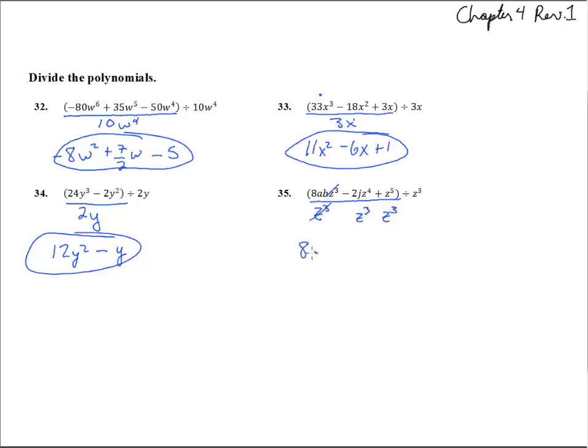There it just cancels out, 8ab. Z cubed over z cubed is gone. 1 minus 2j, and 4 minus 3 leaves the first power there.